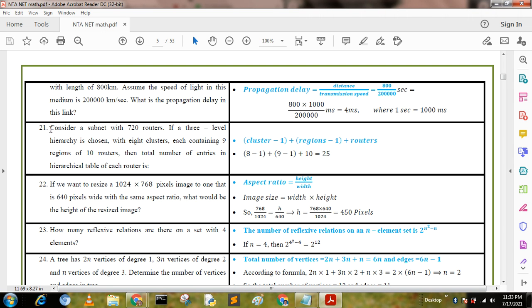Let's start. Consider a subnet with 720 routers. If a tree-level hierarchy is used with eight clusters, each containing nine regions of 10 routers, then total number of entries in hierarchical table of each router is: cluster minus 1 plus region minus 1 plus router. This is the formula. We put this value: 8 minus 1 plus 9 minus 1 plus 10 equals 25. Here 8, 9, and 10 can be found from the factors of 720.